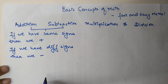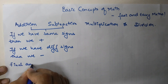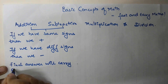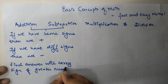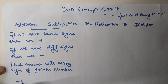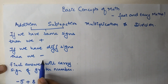A very important thing to note is that the final answer will carry the sign of the greater number. For example, if we have minus 5 plus 8, as we can see there are two signs and both of them are different, so the overall operation here is subtraction.